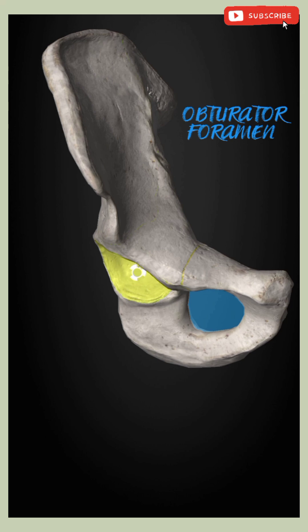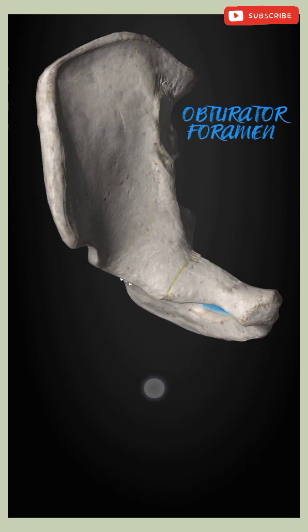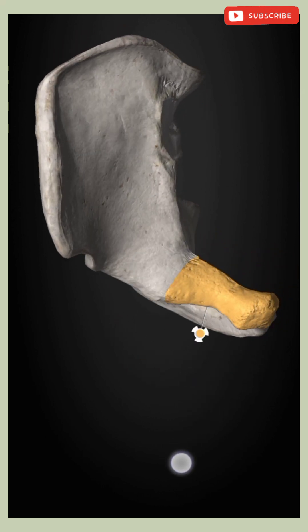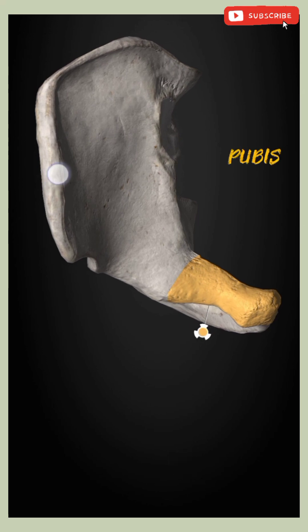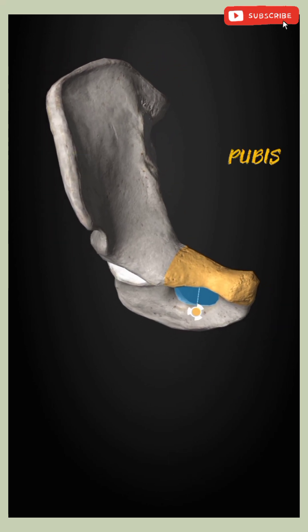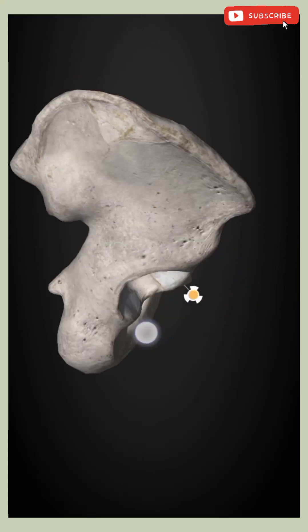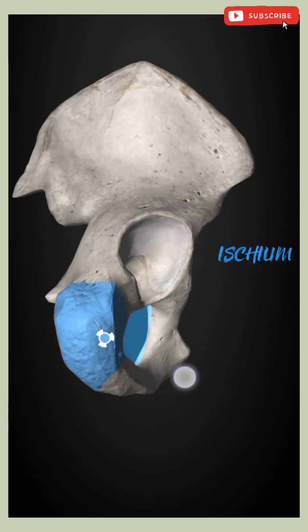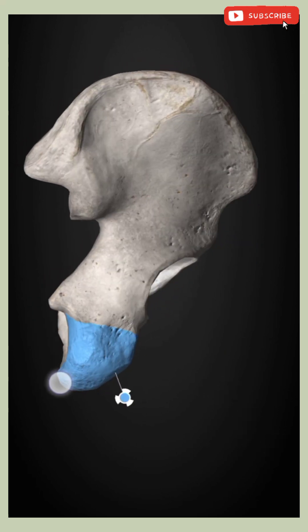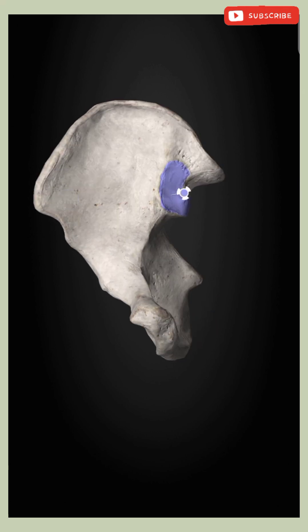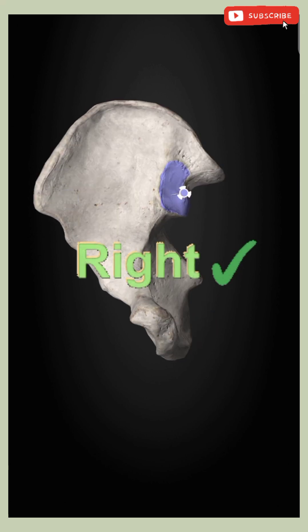The obturator foramen, marked in blue, is bounded anteriorly by the thin pubis pointing medially, and posteriorly by the thick and strong ischium, also marked in blue. The articular surface of the ileum is pointing medially, so this ileum bone belongs to the right side.